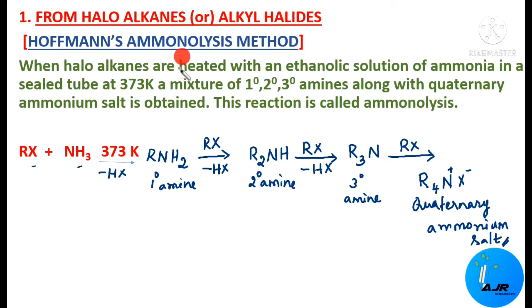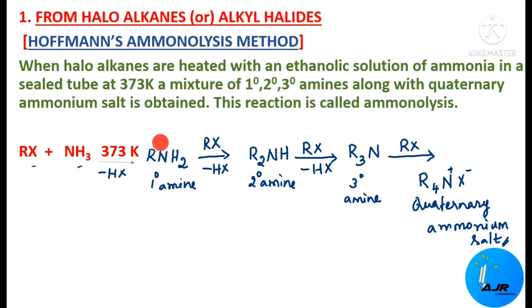There are certain limitations in Hoffmann's method: only a mixture of amines is obtained — primary, secondary, and tertiary. Also, aryl amines cannot be prepared since aryl halides are less susceptible to nucleophilic substitution reaction; only alkyl amines are possible. However, if excess ammonia is used, primary amine will be the major product. If excess alkyl halide is used, the quaternary ammonium salt will be the major product.